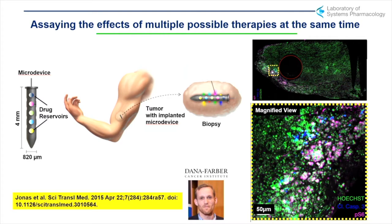Where we're headed now is to do an on-therapy biopsy and assay it by imaging, rather than trying to take a genetic predictor ahead of time. One promising device from the work of Jonas et al. involves micro-devices about three millimeters long that release up to 20 different molecules locally. You can then assay whether there's been an adequate patient response. What we would predict from the independence mechanism is that patients will respond very differentially to individual arms of conventional chemotherapy.